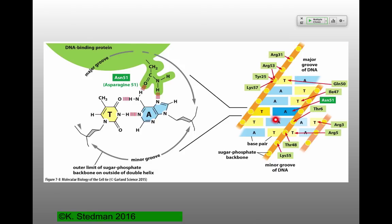What's making all of these interactions? How are we putting them together? If you look at the numbers here — asparagine 51 and threonine 6 — they're really very separate in the amino acid sequence, but right next to each other in terms of how they're interacting with the DNA. That tells you there's lots of other structure which is important in terms of getting these together.